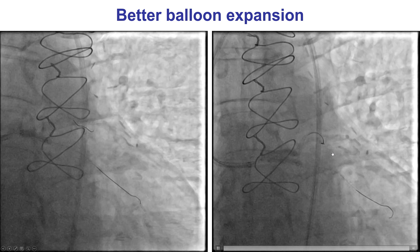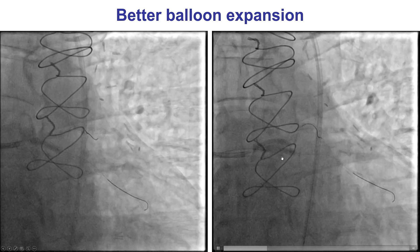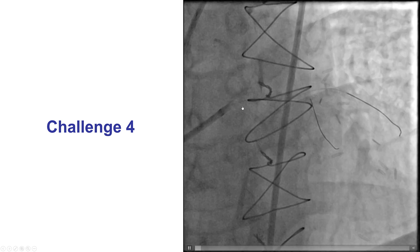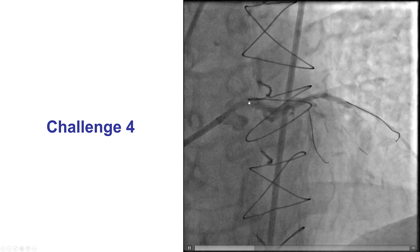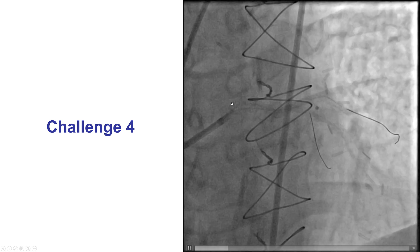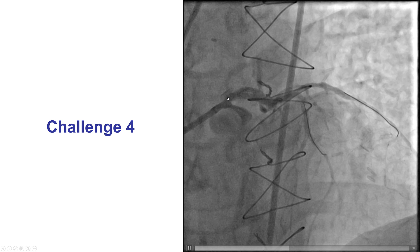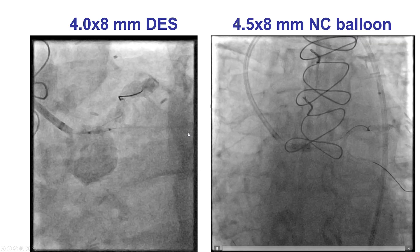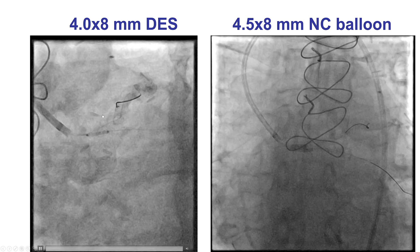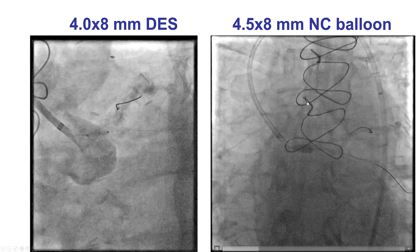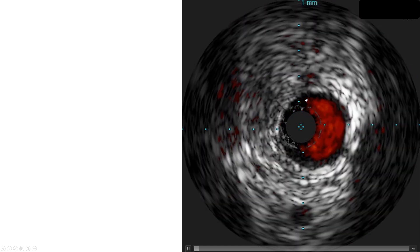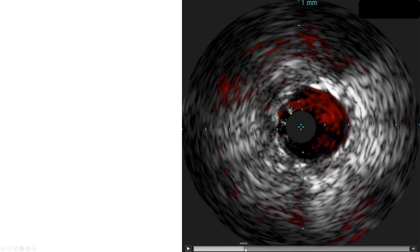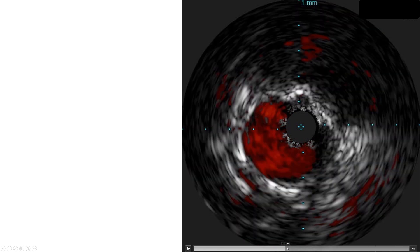After doing that, we were actually able to finally expand the balloon into the circumflex. Of course, more problems arose. We did have a proximal edge dissection — a left main dissection, likely from the high-pressure balloon inflations. So this was treated by placing an additional 4.0 by 8 mm Xience drug-eluting stent, taken up to 4.5 with an 8 mm non-compliant balloon. We performed intravascular ultrasound to check our result and confirm that there was good expansion of the stent, which was the case.